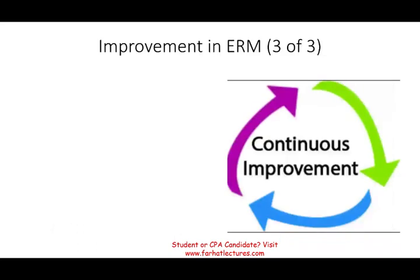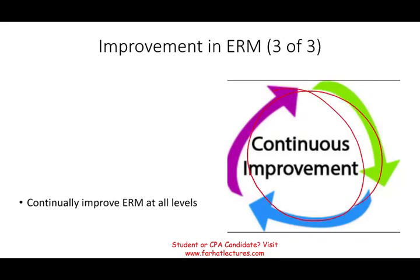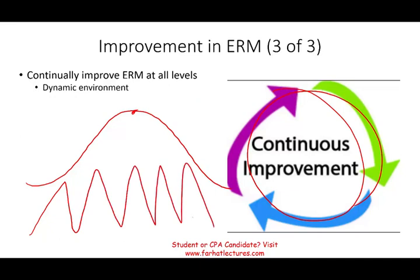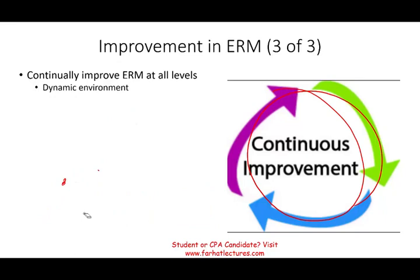The third component is improvement in ERM — you have to continuously improve your process at all levels, because the business environment is very dynamic these days. Products become obsolete quickly. Thirty years ago, the product lifecycle was long, reaching a peak slowly then declining. Nowadays, products peak and decline very rapidly. So you have to continuously review and revise your risk, and improve your ERM to respond to those changes quickly.